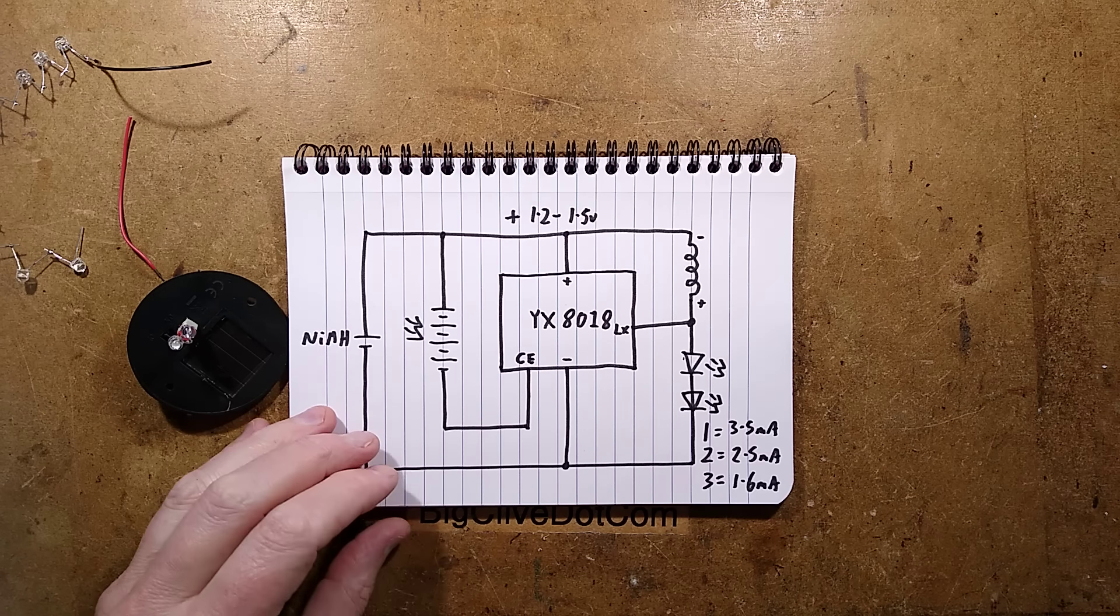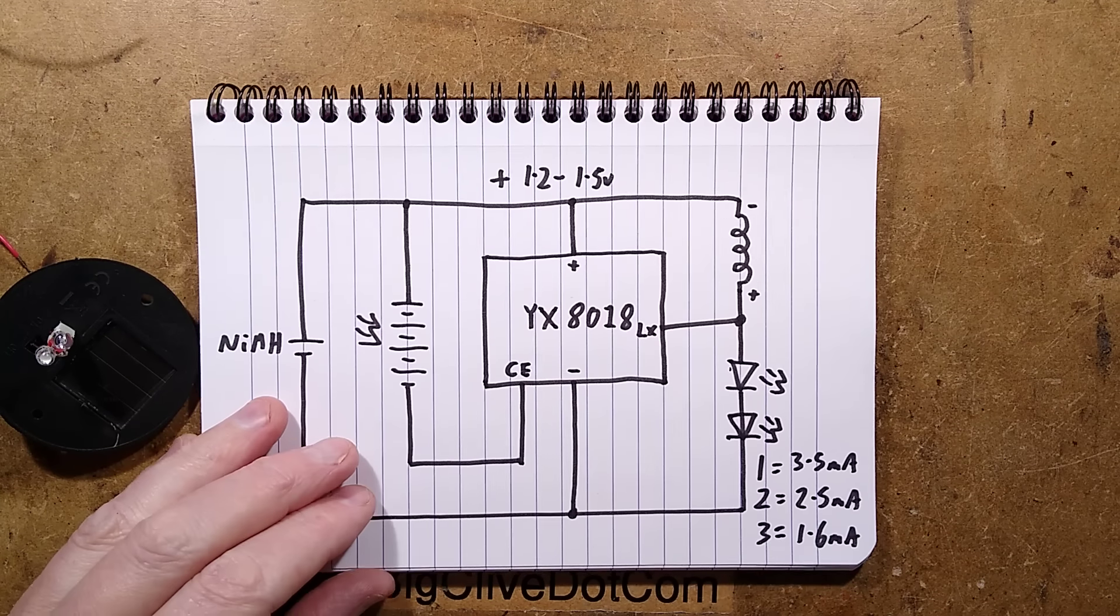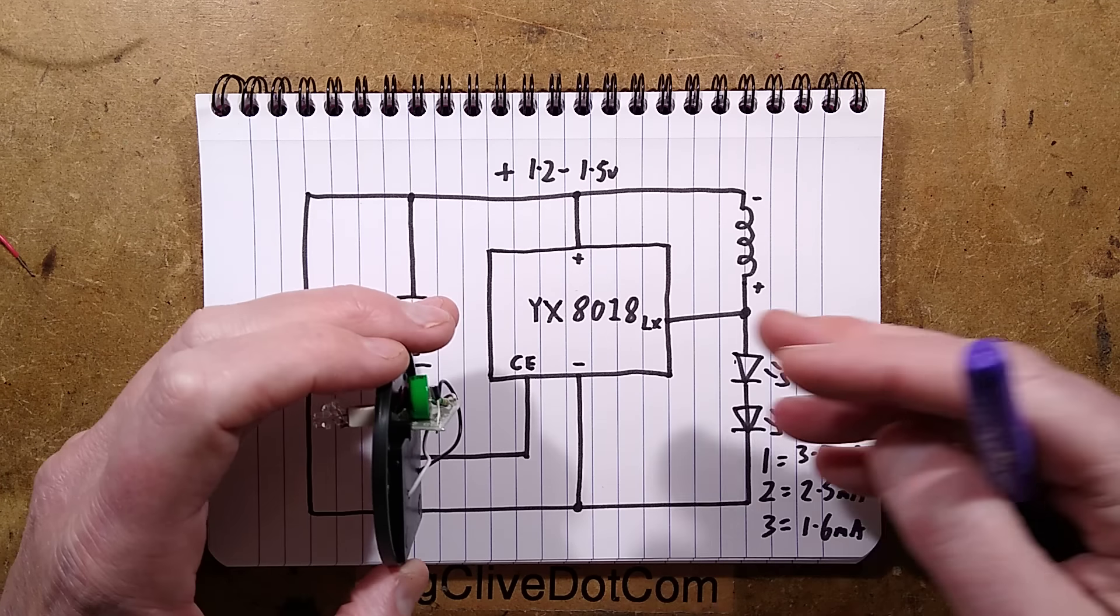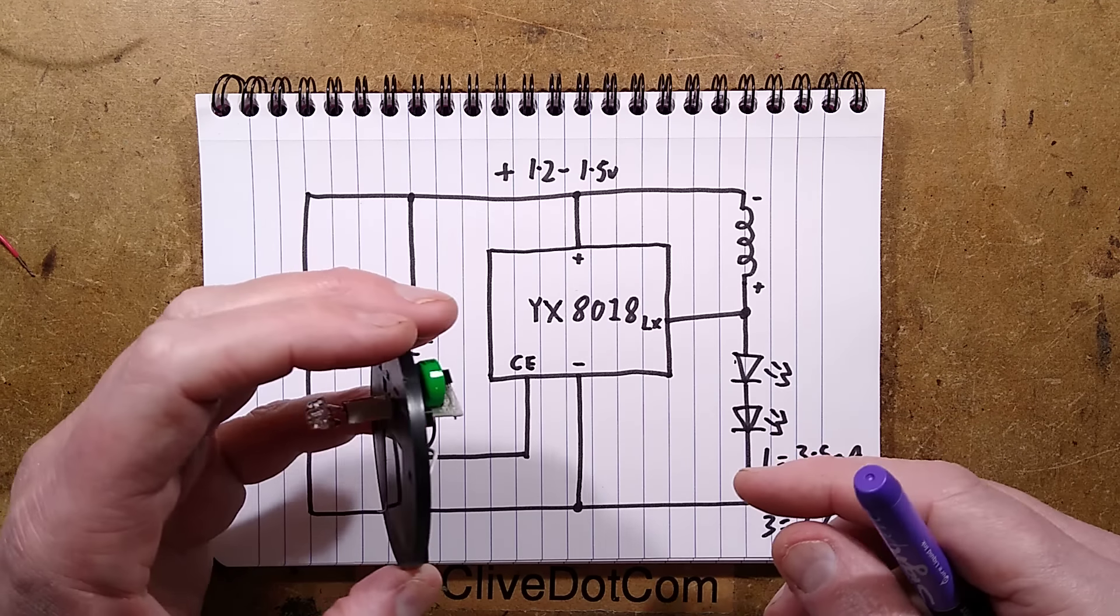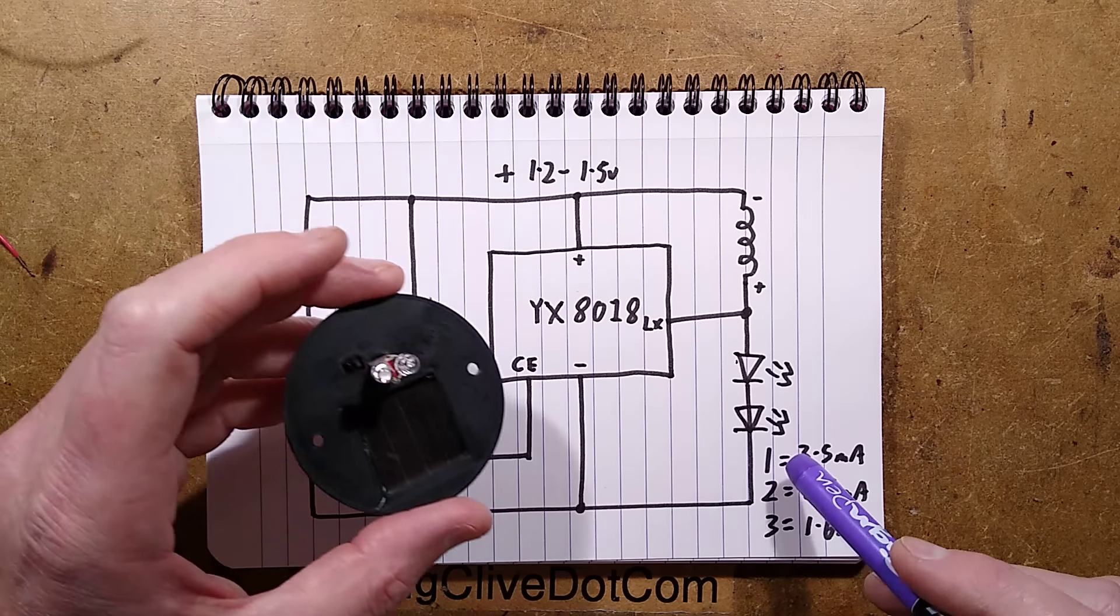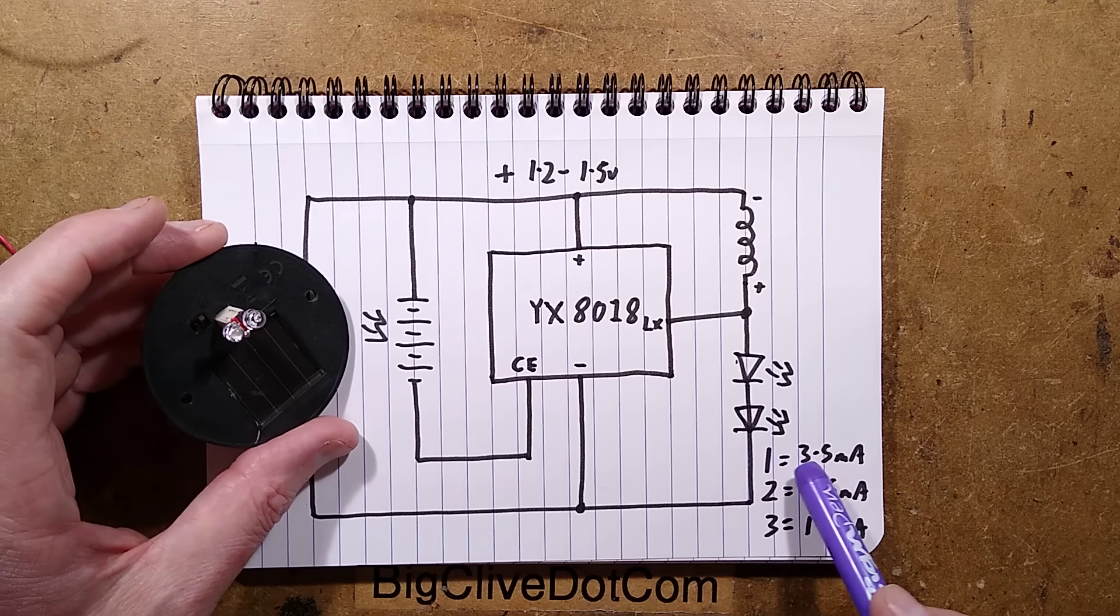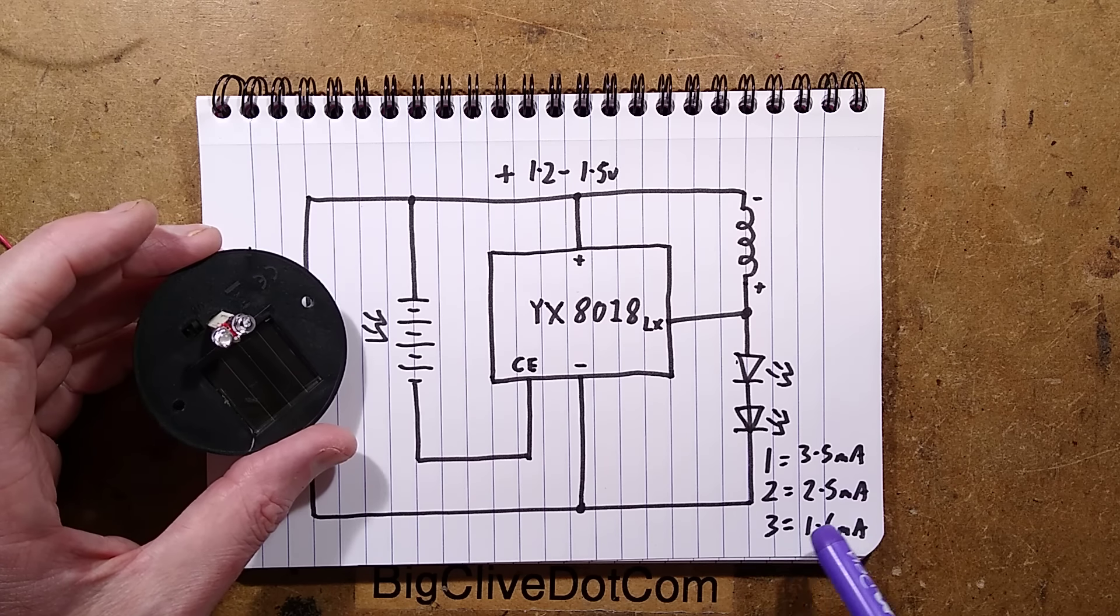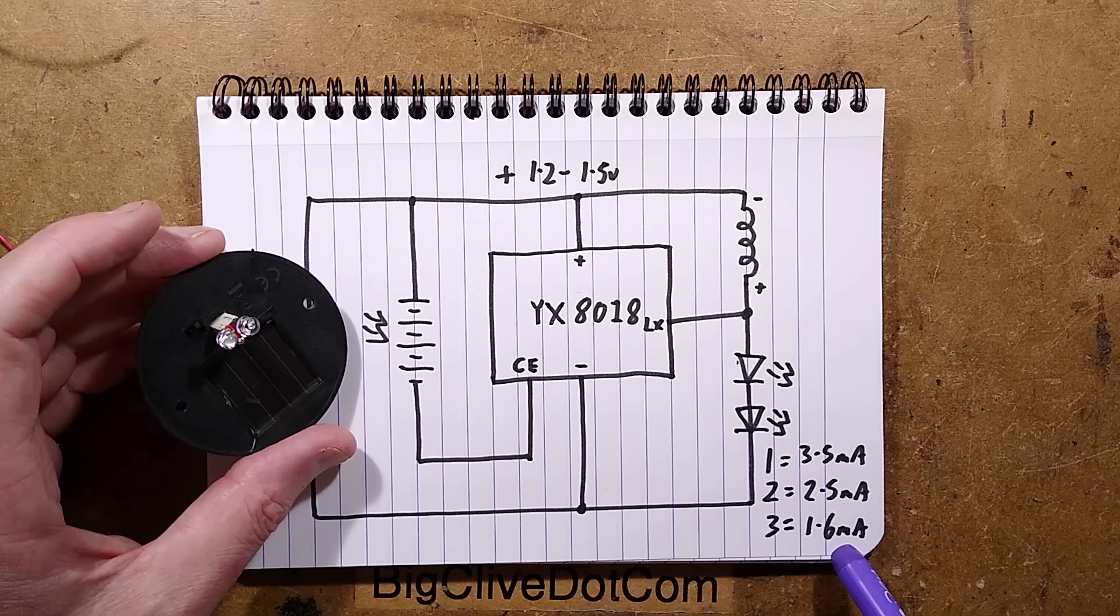The experiment continues. I did another test. I replaced the nickel metal hydride cell with a capacitor, put some leads in the power supply with a current meter in series, and then I monitored the current through from the cell for lighting the LEDs. With one LED, it was 3.5 milliamps. With two, it was 2.5 milliamps. And with three LEDs in series, it was 1.6 milliamps.